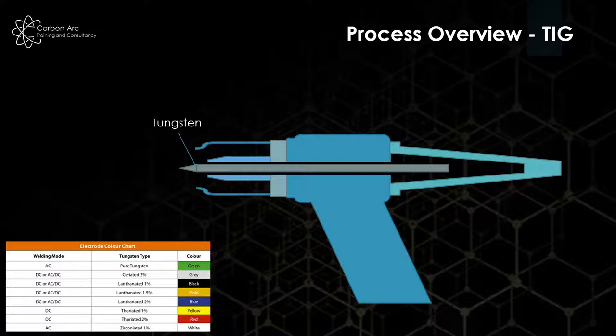The tungsten normally comes in three different types, the most common being thoriated, zirconiated, and ceriated. In the bottom left we have different tungsten types with different percentages of their alloying element. Pure tungsten does reasonably okay, but if we want to increase the current carrying capacity of the electrode we need to alloy it with something.